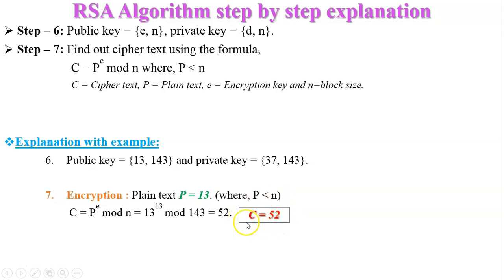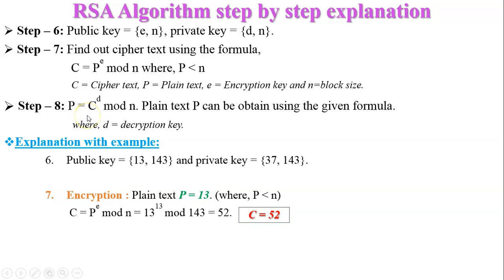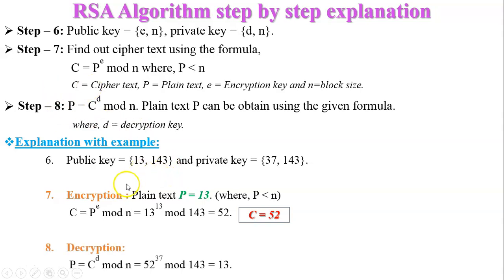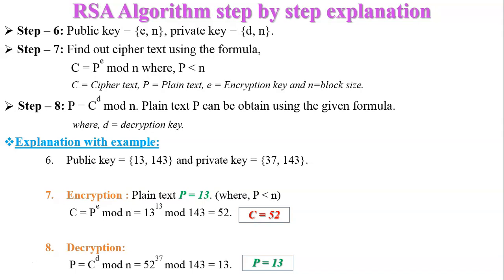Step number eight: at the receiver side, the decryption process is executed. The formula is P equals C raised to d mod n, where d is the decryption key. Putting in the values: P equals 52 raised to 37 mod 143, and we get plaintext P equal to 13. The original message is successfully recovered at the receiver side.